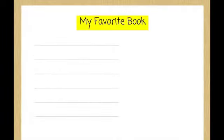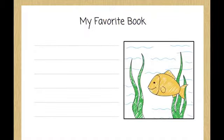First, Evie writes her title, My Favorite Book. Next, Evie draws a picture from the book. What do you see in her picture? Yup! A fish swimming in water.